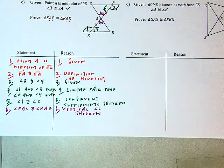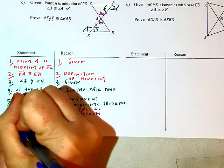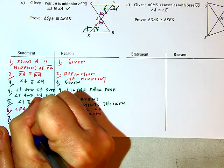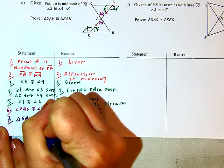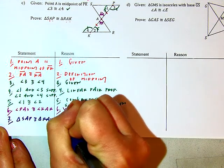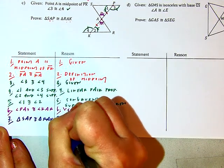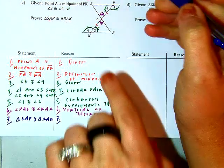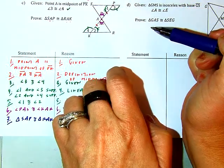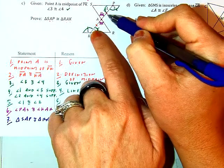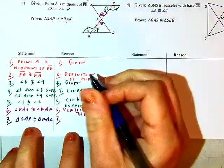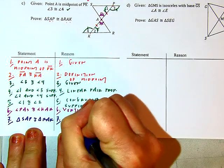Now I'm ready to reach my conclusion. I've shown that my triangles are identical — triangle SAP is congruent to triangle RAK. I have two pairs of corresponding angles that match and their included sides that match as well. My reason is angle-side-angle.